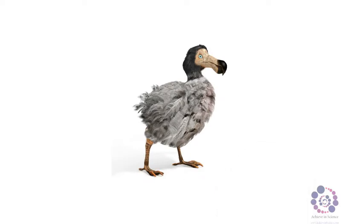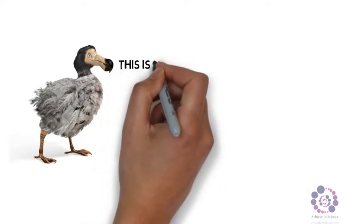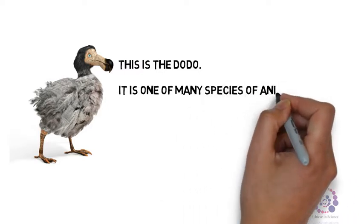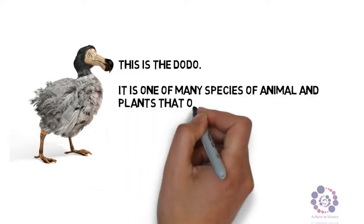First of all, let's have a look at this animal. This is the dodo. It is one of many species of animals and plants that once inhabited the earth which have died out or become extinct.